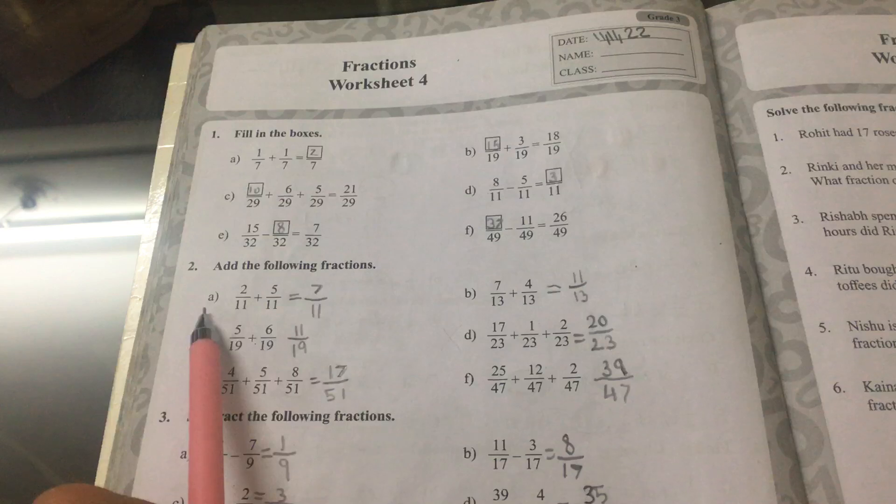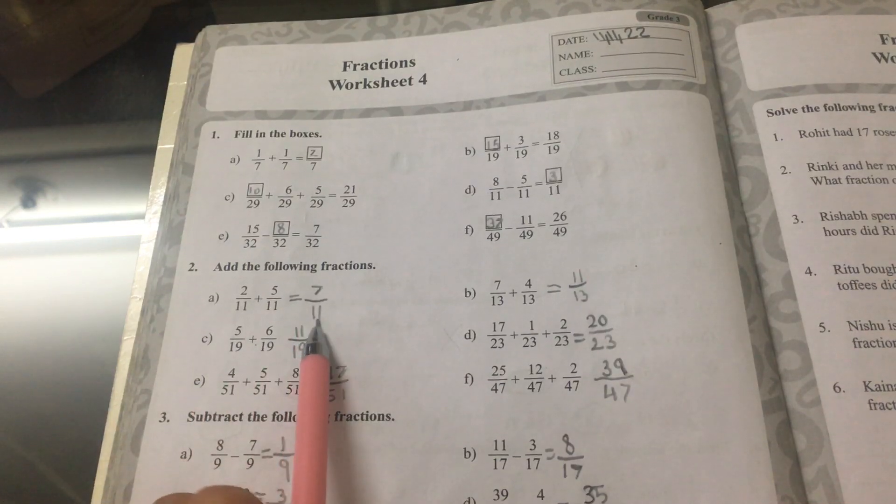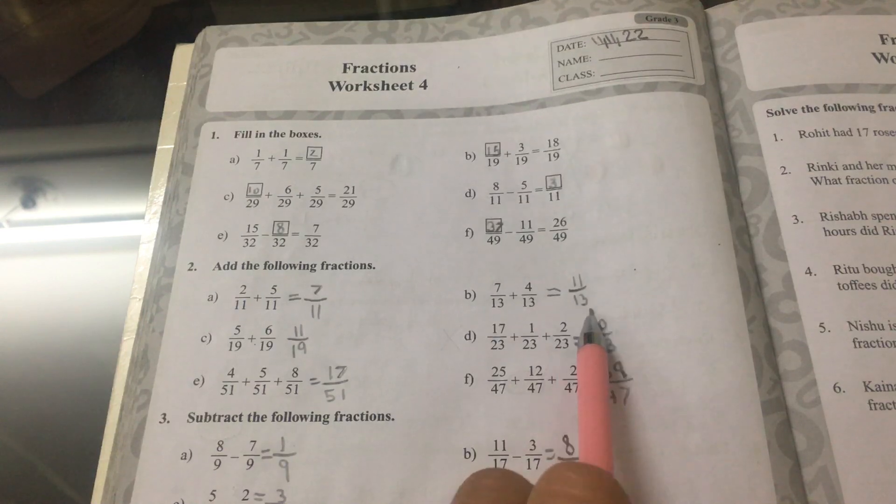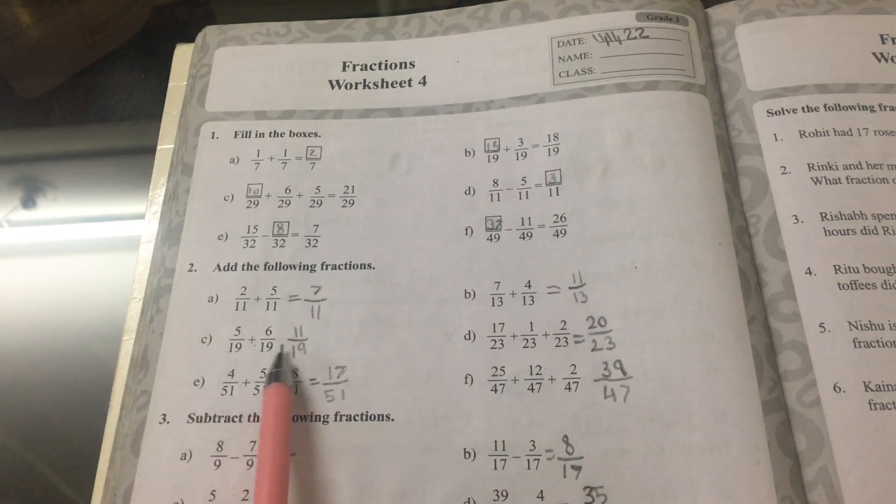Number 2. Add the following fractions. So, A is equal to 7 elevenths. B is equal to 13 seventeenths.